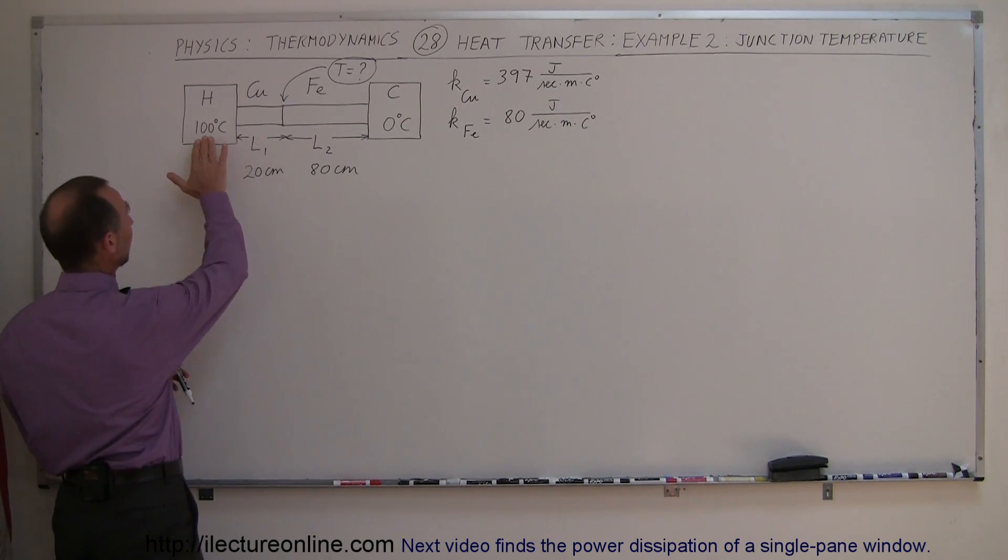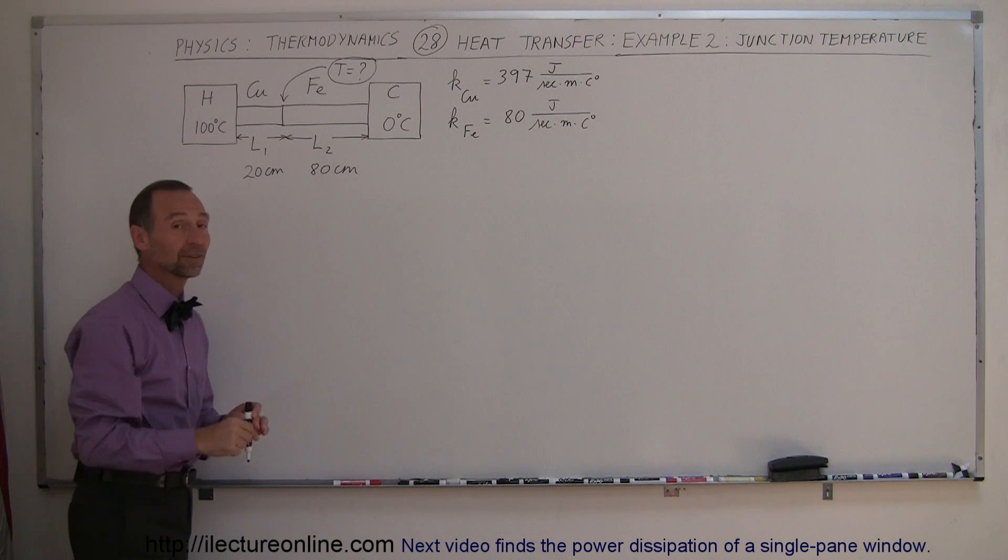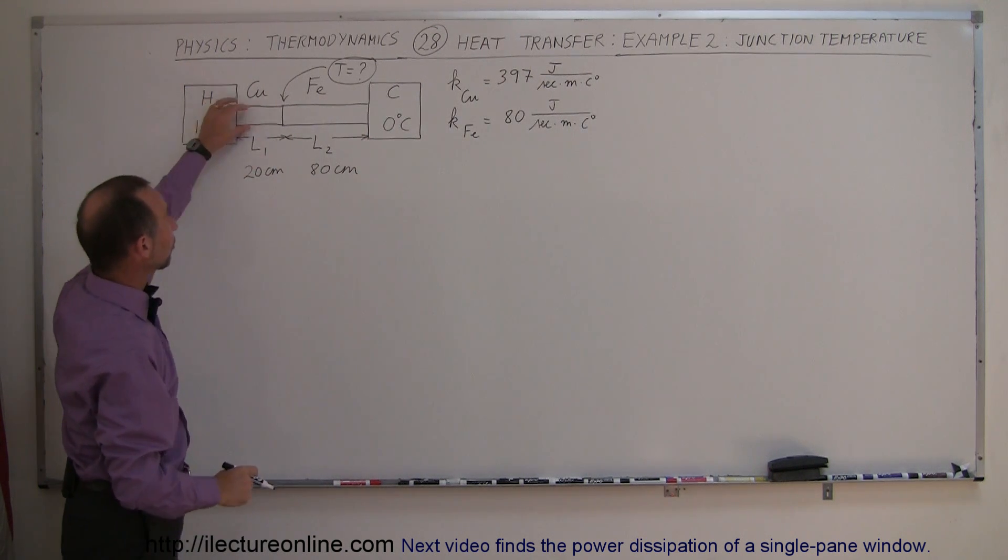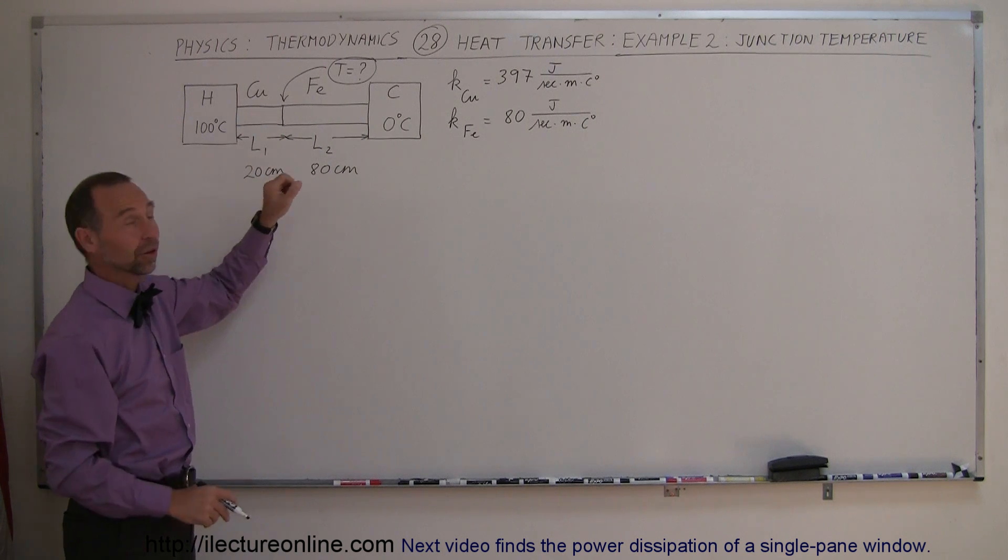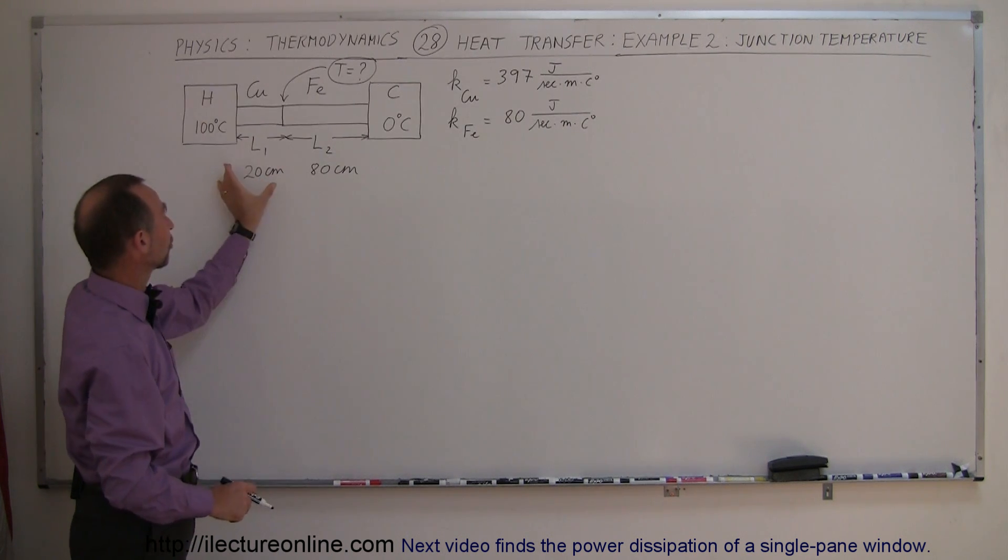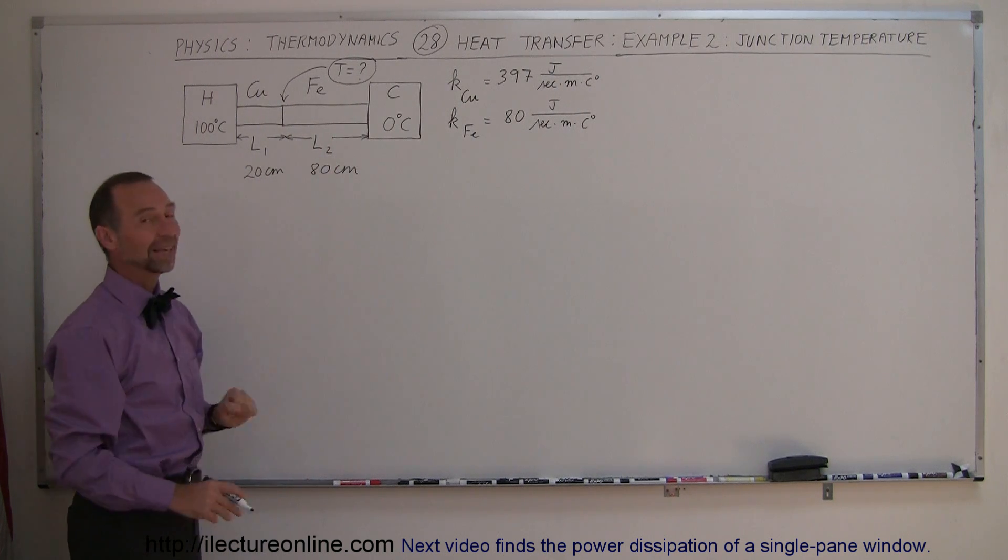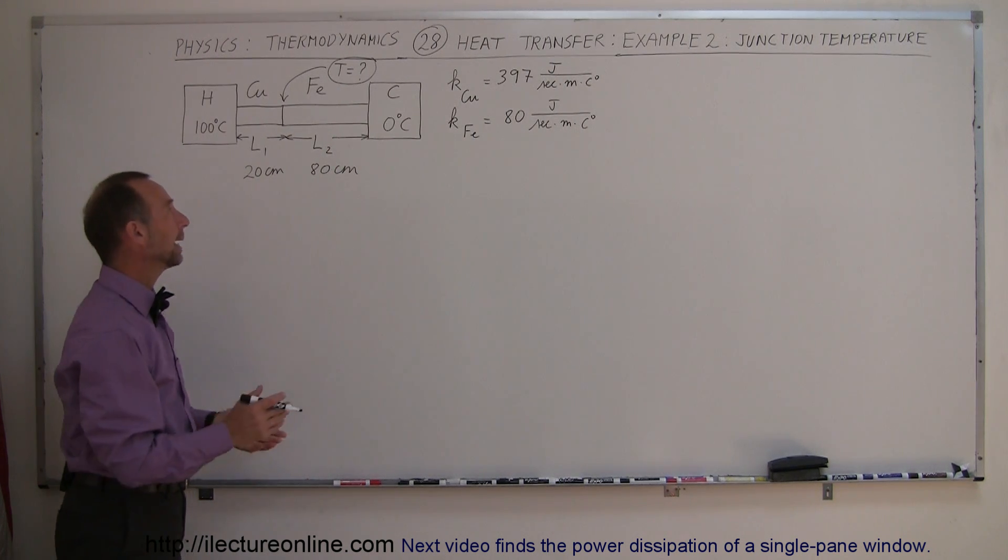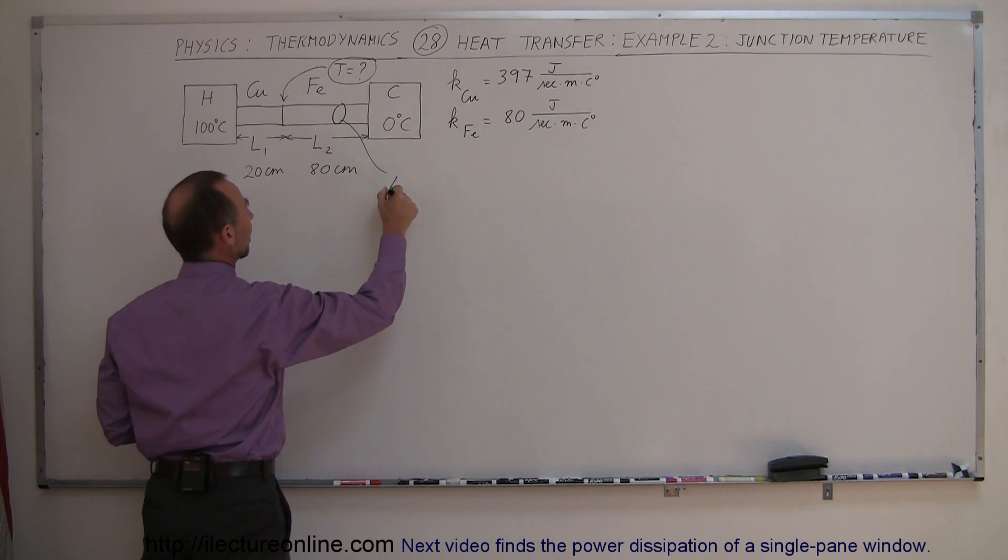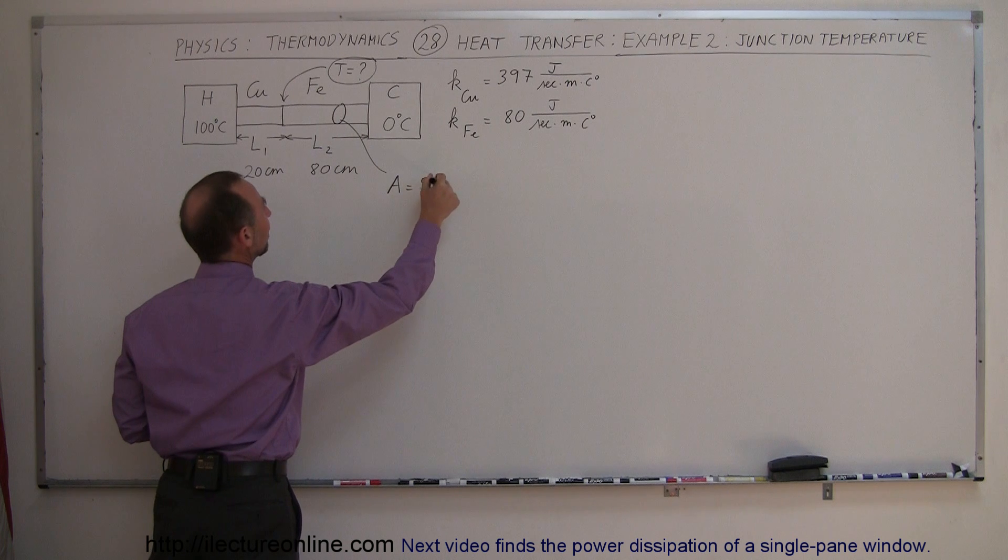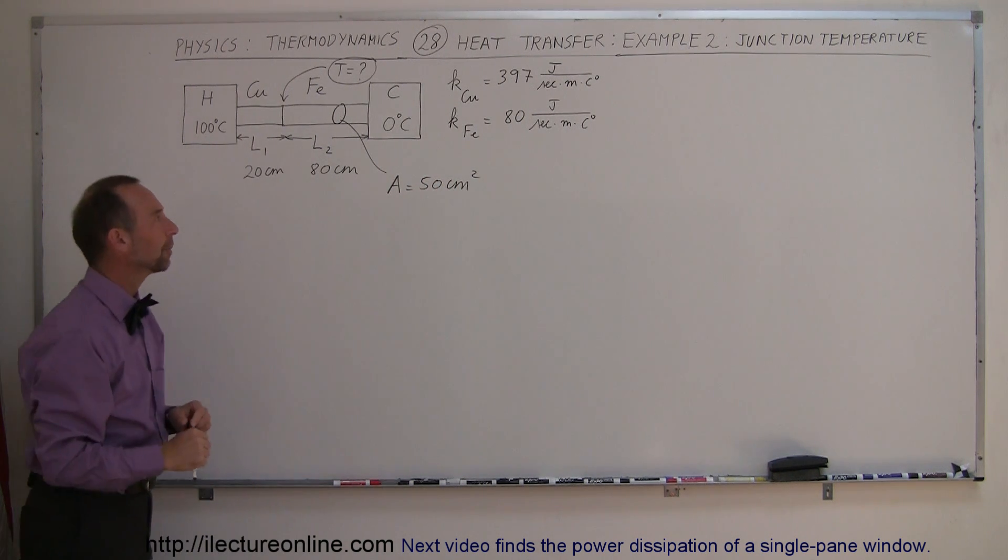What's happening here is we have a hot reservoir at 100 degrees centigrade, a cold reservoir at 0 degrees centigrade, and a heat conduction pad between the two, but it's made out of two different materials. On the left we have a bar of copper, which is 20 centimeters long, and to the right we have a bar of iron, which is 80 centimeters long. Let's say that the cross-sectional area is equal to 50 centimeters squared. It's a small thin bar.